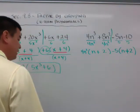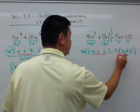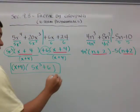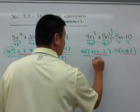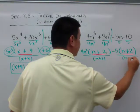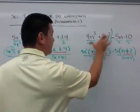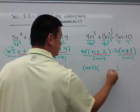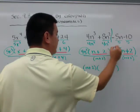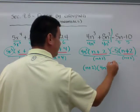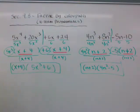So that's one of the tricky ones as far as having a negative over here on that side. And again, you can see that the n plus 2 is the same. So now when I factor it out, I can pull an n plus 2 out of both of these, and I'm left with n plus 2 times 4n squared minus 5. And that's how you factor a four term polynomial.